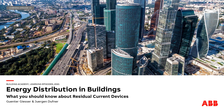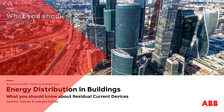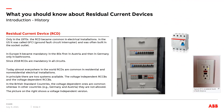In this episode you will learn what is important to know about RCDs. Only in the 1970s did the RCD become common in electrical installations. In the US it was called GFCI, ground fault circuit interrupter, and was often built into a socket outlet. In Europe it became mandatory in the 80s, first in Austria and then in Germany, only in bathrooms. Since 2018 RCDs are mandatory in all circuits. Today, almost everywhere in the world, RCDs are common in residential and non-residential electrical installations.